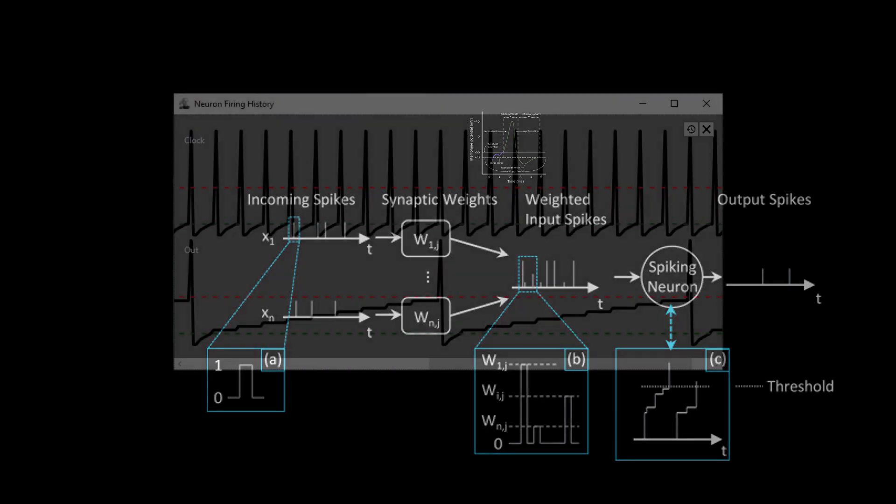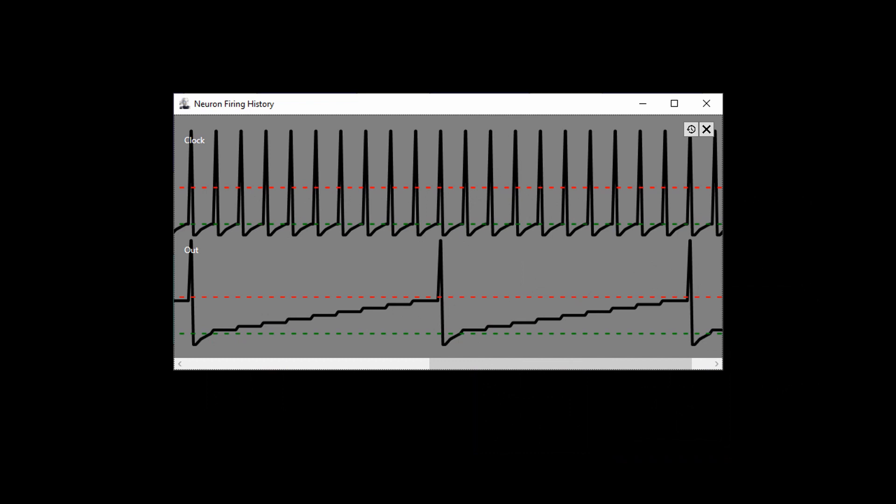The biological neuron accumulates charge from incoming synapses and emits a spike when a threshold is reached. In this timing diagram, each spike of the upper neuron contributes to the charge of the lower neuron until the threshold is reached. Then the lower neuron emits a spike of its own and the process can repeat.